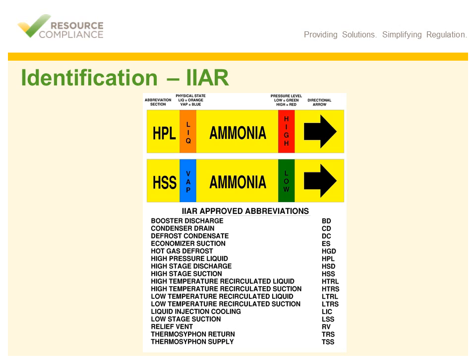The International Institute of Ammonia Refrigeration, or IIAR, has also developed a labeling system for ammonia pipes that has been widely adopted in the ammonia refrigeration industry. The IIAR system recommends that each pipe is labeled with a yellow label containing the following five things: one, the word ammonia in black font; two, a directional flow arrow; three, a pressure band indicating whether the pipe is under high or low pressure; four, a physical state band indicating whether the pipe contains liquid or vapor; and five, a service abbreviation which indicates the function or service of the pipe. A list of a few of the recommended service abbreviations has been included on this slide.